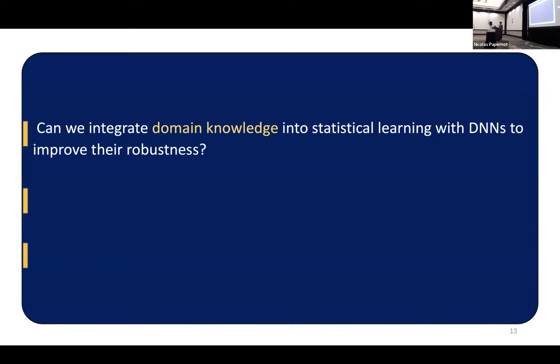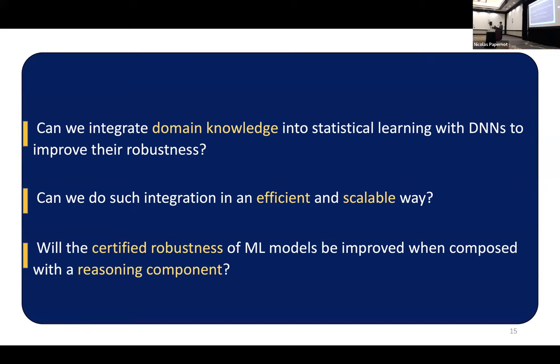So in our work, we aim to answer three questions. The first question is can we integrate domain knowledge into statistical learning with deep neural networks to improve the robustness? And the second question is can we do such integration in an efficient and scalable way? And the third question is we are wondering how much the certified robustness will be improved with such reasoning component.